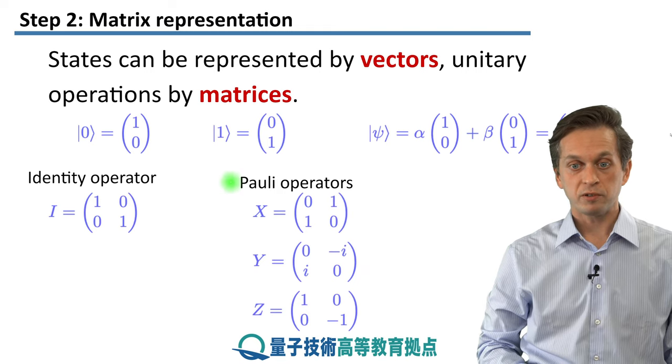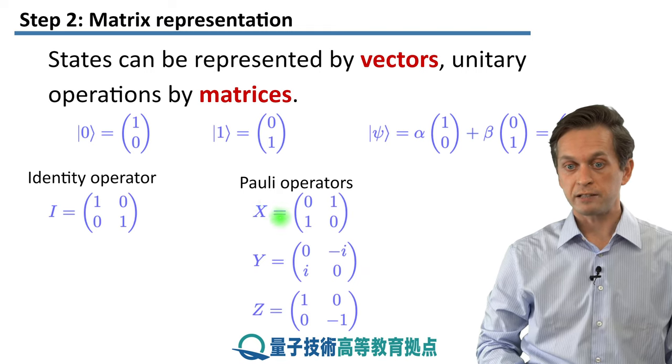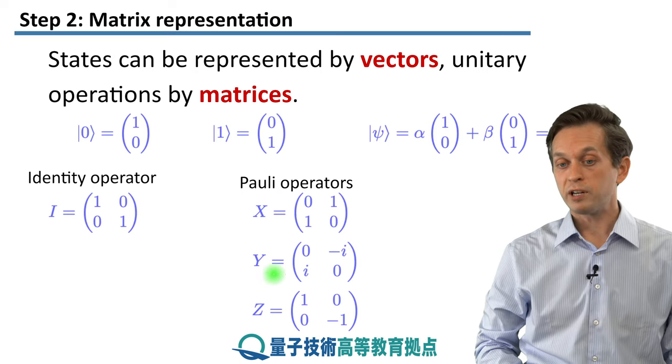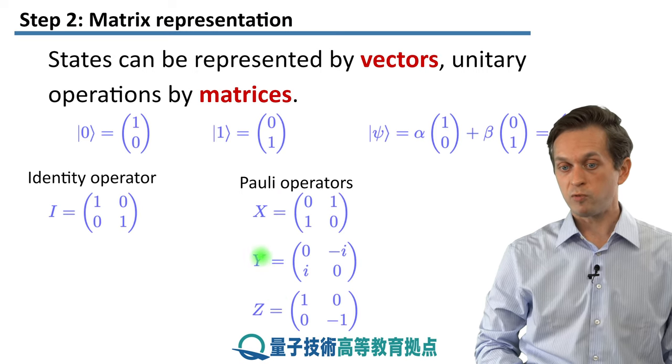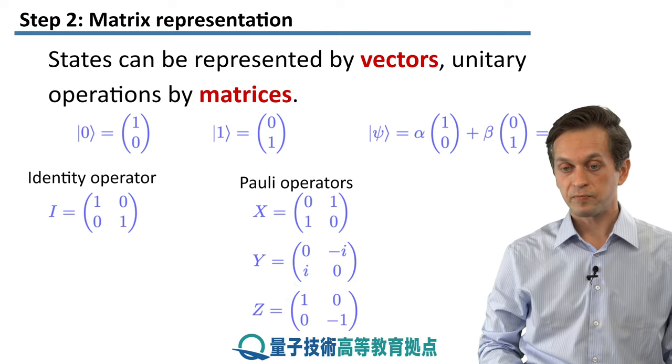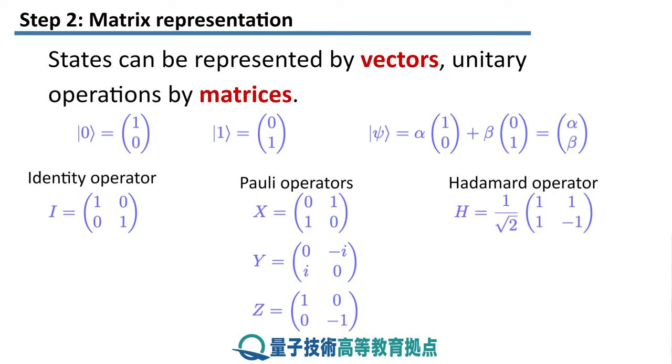Pauli operators. We have encountered one Pauli operator already, the X operator, which flips our ket from 0 to 1 and from 1 to 0. But there are two other very important Pauli operators, the Y and the Z. And they have these matrix representations.